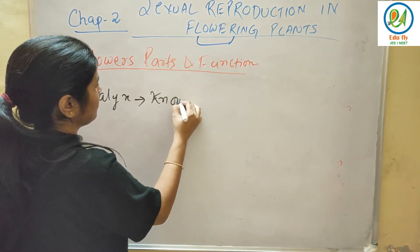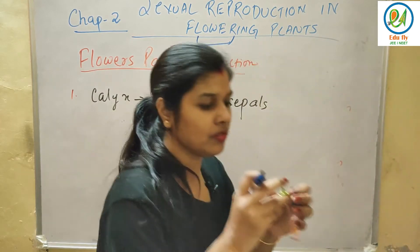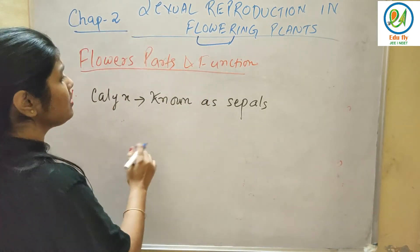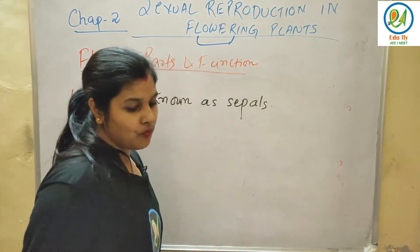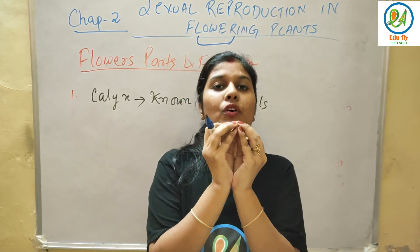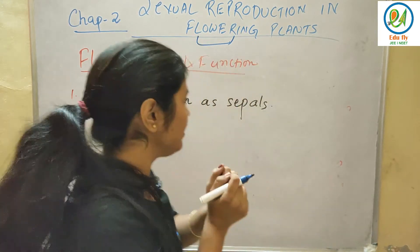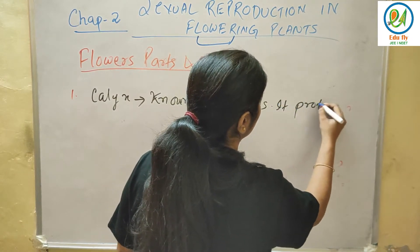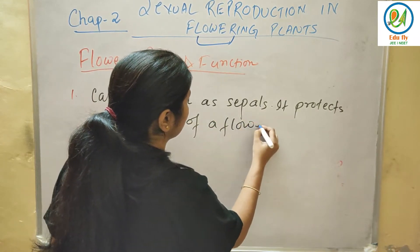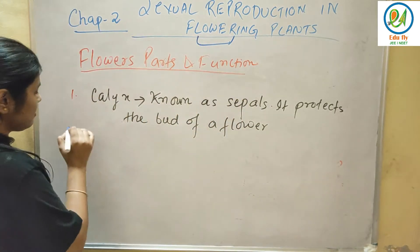Calyx is commonly known as sepals — that small one in the diagram. The function of calyx is to protect the flower. When the flower is a bud, calyx protects the bud. So the function of calyx is to protect the bud of the flower.